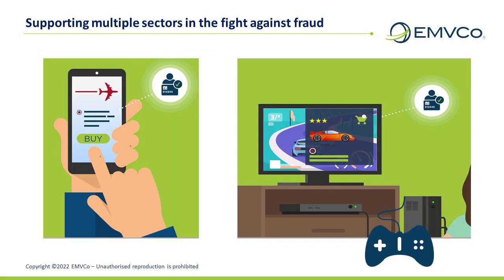Several industry sectors work with EMVCo to adapt the EMVCo specification to support specific use cases and to define supplementary information to be communicated to help reduce fraud. In travel, the EMVCo 3DS Travel Industry Message Extension provides supplemental guidance on how travel-specific data elements can be used to improve e-commerce payment authentication for travel purchases. It was developed with key travel industry players and is specifically designed to meet the needs of airlines and travel agents to reduce transaction fraud while minimizing additional friction. It is independent of the protocol version and can be used with EMVCo 3DS versions 2.1, 2.2, and 2.3.